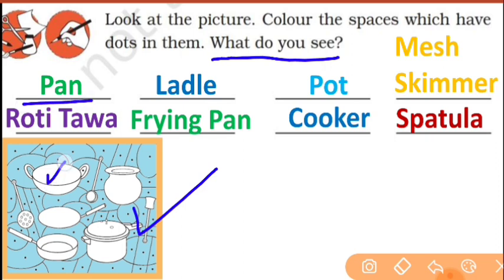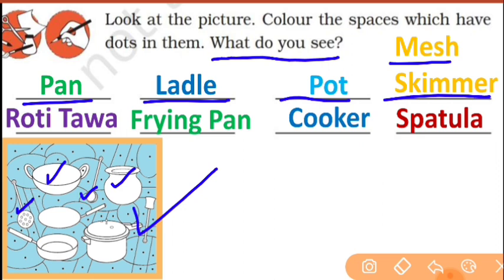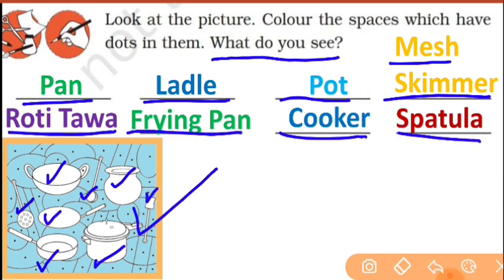You can see the pan here, ladle, then pot — you can see the pot here — then mesh skimmer, you can see the mesh skimmer there, frying pan, cooker, and then spatula. You can see many utensils hidden in that picture. It was a puzzle.